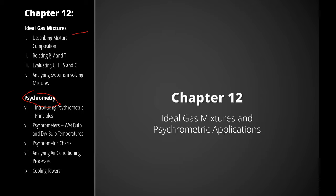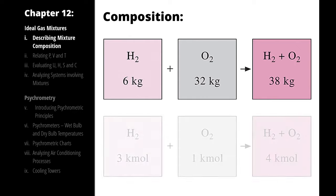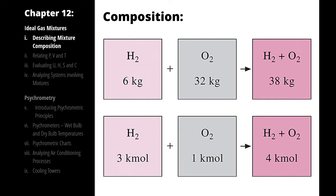Before we can talk about the mixture of water vapor and air, we need to talk about ideal gas mixtures in general. We'll start by describing mixtures in a general case and their properties. When we talk about mixtures of gases, we can describe the proportions in two ways. The first is on a mass basis, also called a gravimetric analysis, where we describe proportions by mass, which is also by weight. We can also describe mixtures on a molar basis. Note that because the molar mass of the individual substances could be different, the molar proportions might not be the same as the mass proportions.